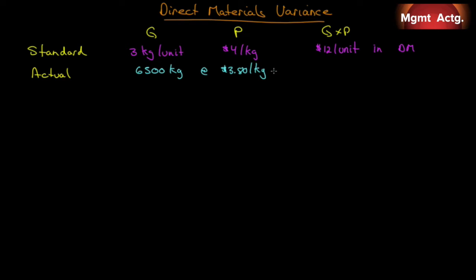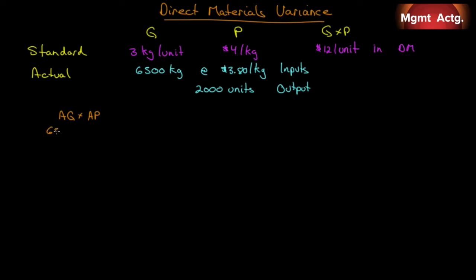Those are our inputs to the process — actual quantity and actual price. We also need to know what our outputs were: two thousand units is what we made with those inputs. Now we're in a position to do a full standard cost variance. The first column is actual quantity times actual price — our actual results. Actual quantity was 6,500 and actual price was $3.80 per kilogram, for a total cost of $24,700.